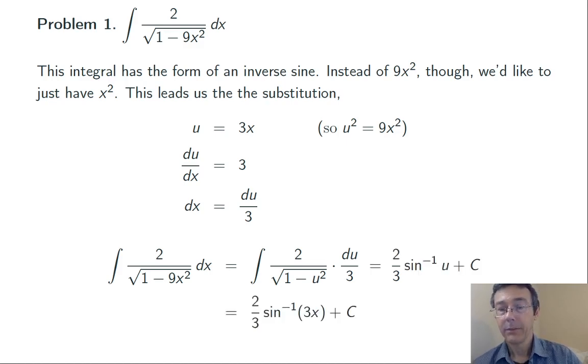Last step. Take out the u, replace it with what it's equal to, 3x. We get two-thirds inverse sine of 3x plus c.